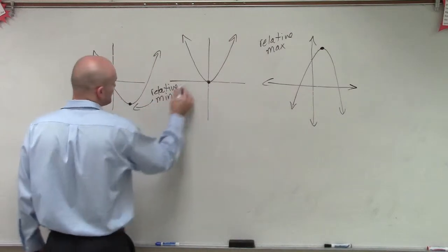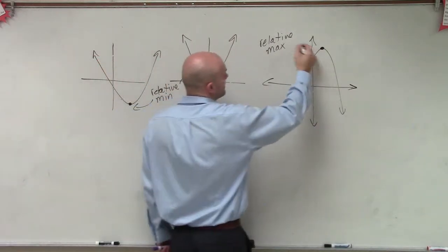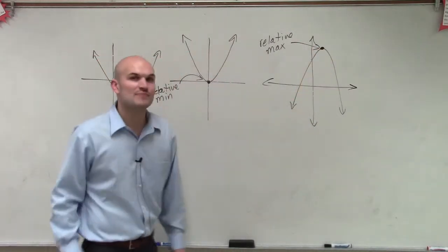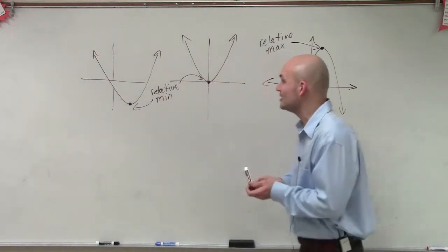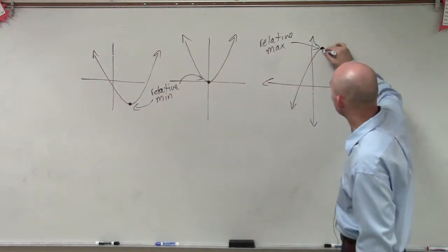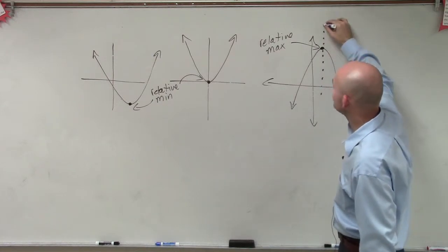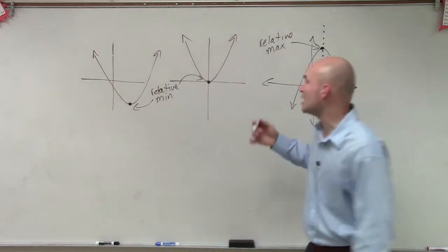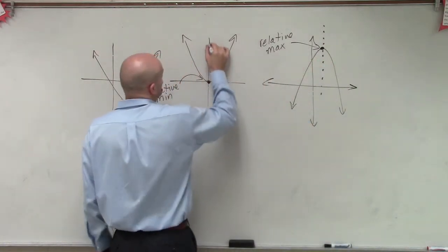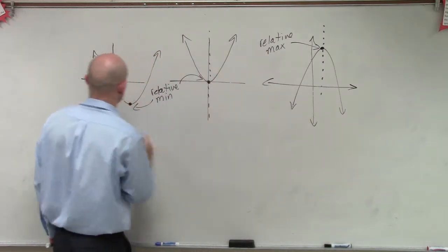And another just important thing to kind of tie together is you can also see these relative min and max, without kind of getting into the axis of symmetry, but you can also notice that these are also, these points, these relative min and max, also go through the symmetrical line of our parabola.